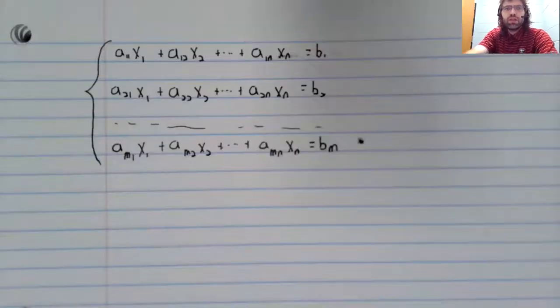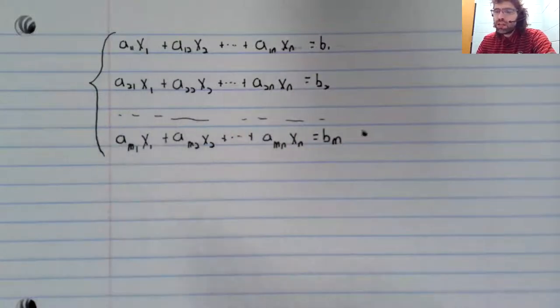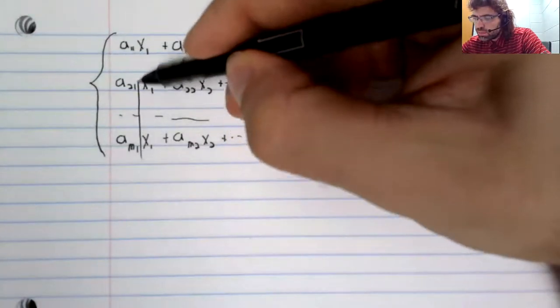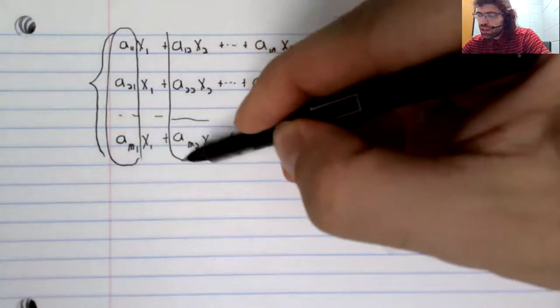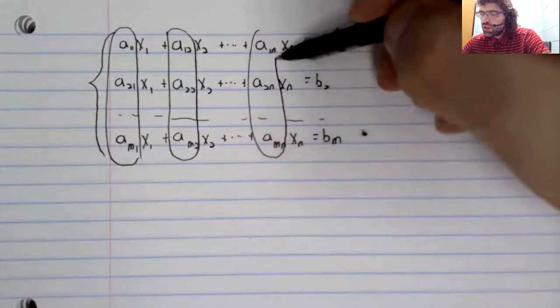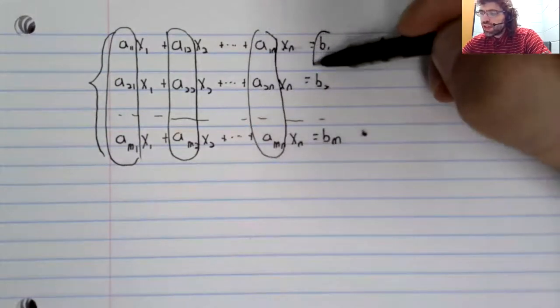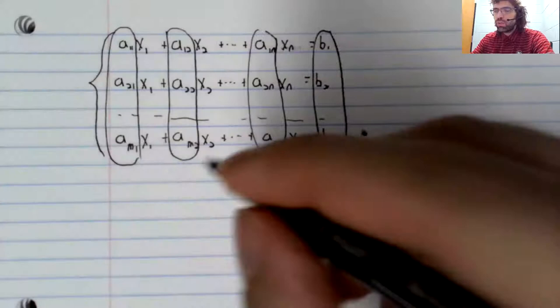We've already made the observation in section 1.3 that systems of linear equations and vector equations are really the same thing. If you take this system and you form vectors out of these coefficients and vectors out of these numbers to the right of the equality,